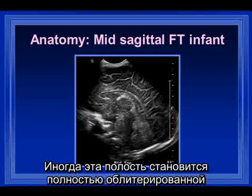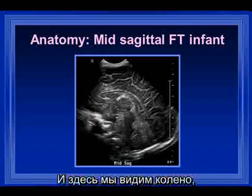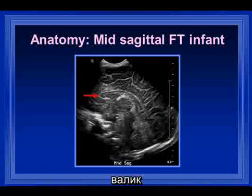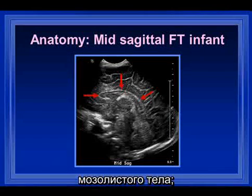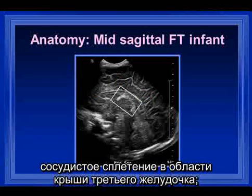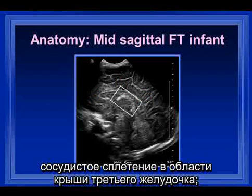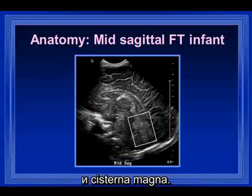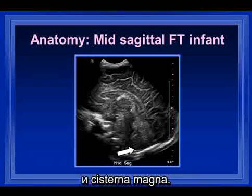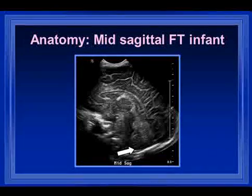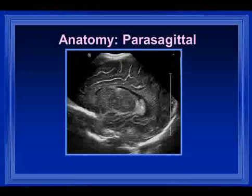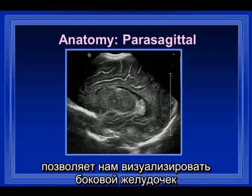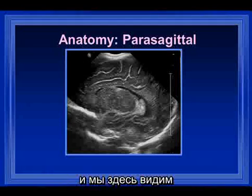Notice that once babies become full term, there is less visualization of the cavum septum pellucidum — sometimes it is totally obliterated by that age. Here we see the genu, the body, the splenium of the corpus callosum, the choroid plexus in the roof of the third ventricle, the fourth ventricle, the brain stem, the cerebellum, and the cisterna magna.